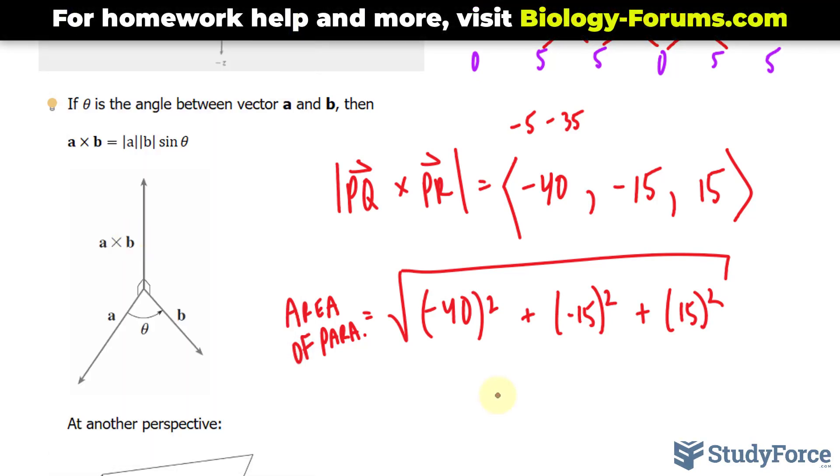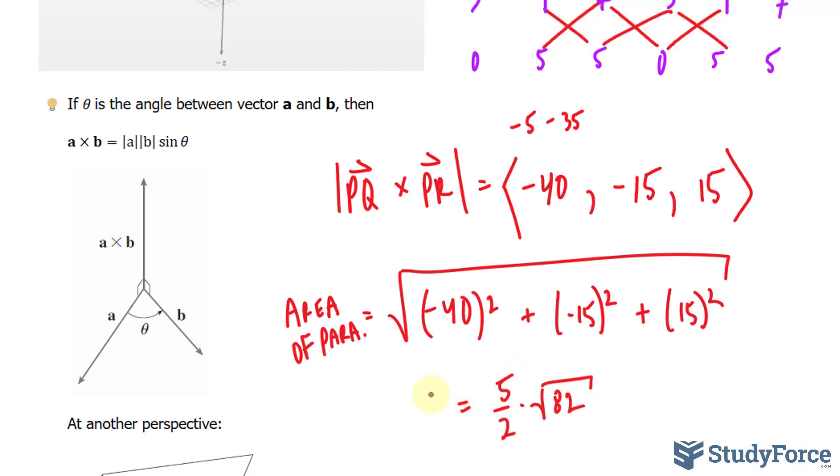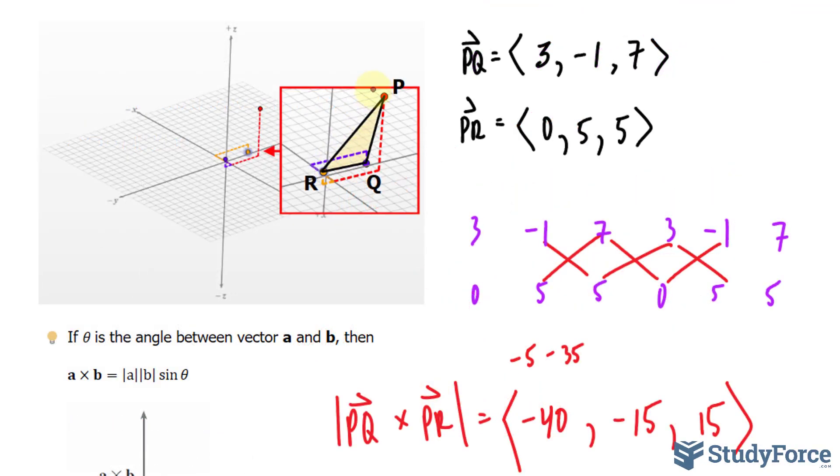That gives us 5 times the square root of 82. And if we divide that by 2, we end up with 5 over 2 times the square root of 82. And that is the area of this shaded region.